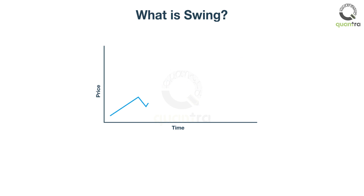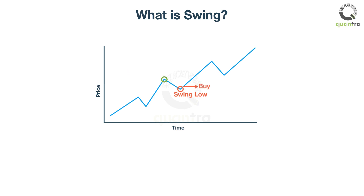When the price level reaches a high and then starts declining, it is called a swing high. Similarly, when it reaches a low level and then starts increasing, it is called a swing low. As a trader, you will first identify the swing patterns. You can capitalize on this pattern by buying when the price has reached a swing low, and you will sell when it reaches your profit target. This is called swing trading.